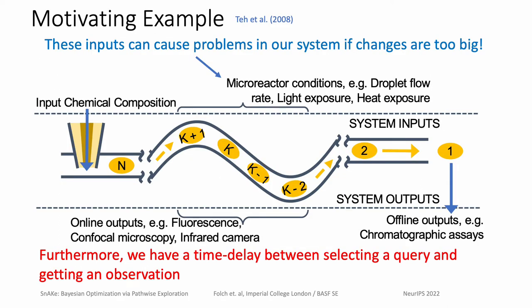As a motivating example for this setting, consider a droplet microfluidic reactor. In them, we can control conditions such as temperature and flow rate. However, large changes to either input means we are faced with long waiting times while the system stabilizes. In addition, we have a time delay because we must wait for droplets to flow from the entrance of the reactor to the end before obtaining any output.